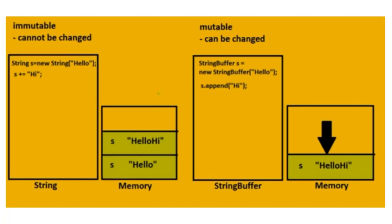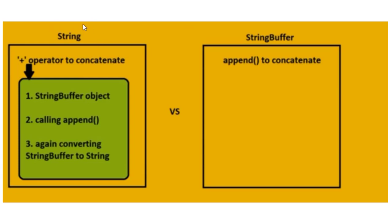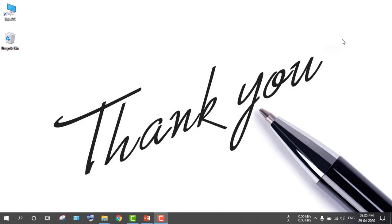In the case of mutable StringBuffer, no new memory allocation occurs even when the value changes for the same variable. In String, using the plus or concatenation operator actually calls a StringBuffer object internally, then calls the append function, and converts it back to String. So in conclusion, StringBuffer is faster than String. With this, I am ending the session on string handling introduction.